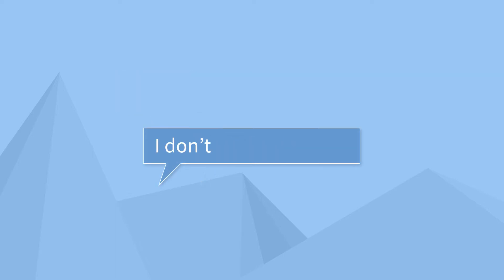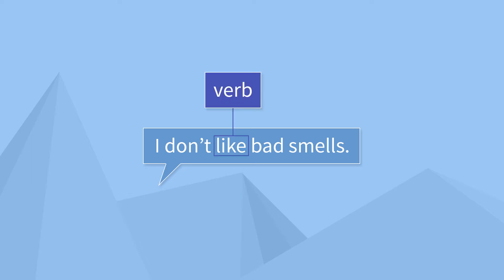Sentence number two: 'I don't like bad smells.' In this sentence, we don't have an action, but we do have a state, which is to like — or in this case, to not like. So that's our verb. And again, not liking is done by 'I,' so that's our subject. So for sentence number two, the subject is 'I' and the verb is 'like.'